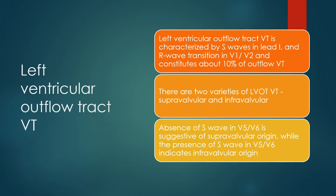Left ventricular outflow tract VT is characterized by S-waves in lead 1 and R-wave transition in V1 and V2, constituting about 10% of outflow VTs. There are two varieties: supravalvular and infravalvular. Absence of S-waves in V5 and V6 is suggestive of supravalvular origin, while presence of S-waves in V5 and V6 indicates infravalvular origin.